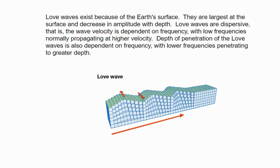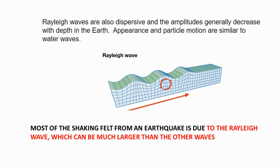The next set of waves are called Rayleigh waves, and they are the most important in terms of human beings. Rayleigh waves are also dispersive in nature and their amplitudes generally decrease with depth. Their appearance and particle motion are similar to water waves. Most of the shaking felt from an earthquake is because of Rayleigh waves — the shaking we feel in our homes is due to Rayleigh waves maximum times. They can be much larger than the other waves.